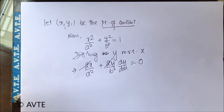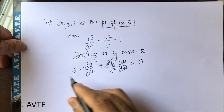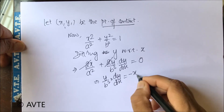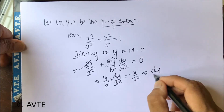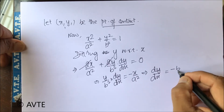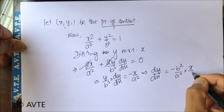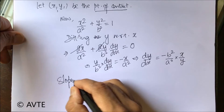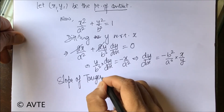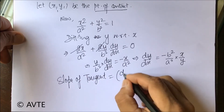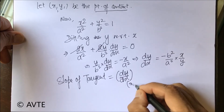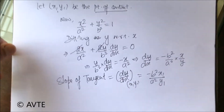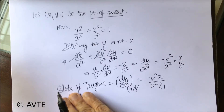Taking two common and putting that below zero. Now making the equation of the tangent.